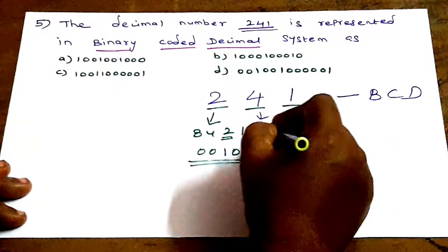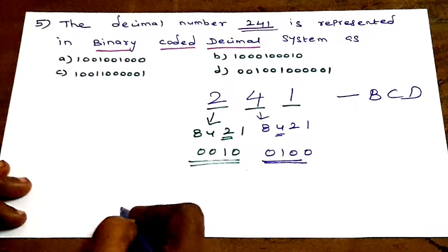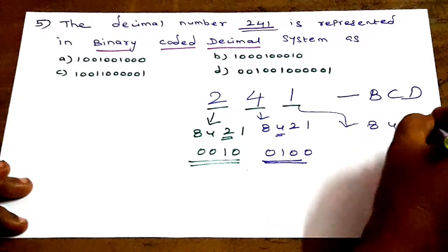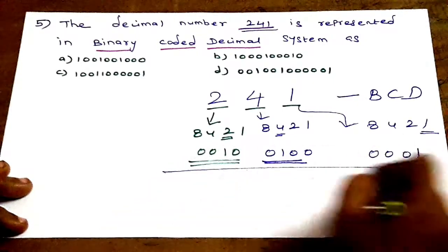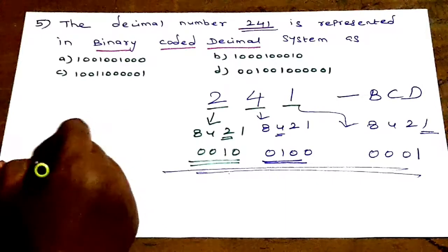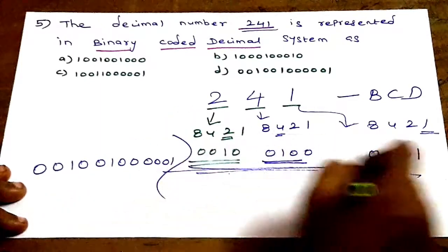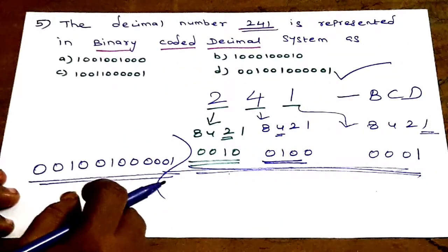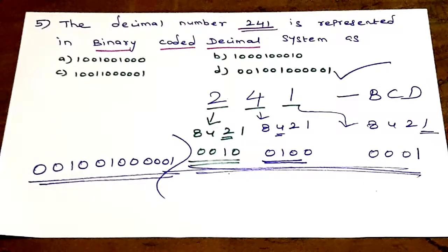Using the 8421 method: digit 2 → 0010, digit 4 → 0100, digit 1 → 0001. So decimal 241 in BCD is 0010 1000 0001. This is the answer for the binary coded decimal conversion.